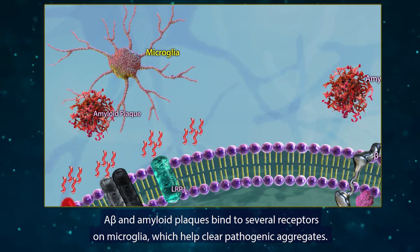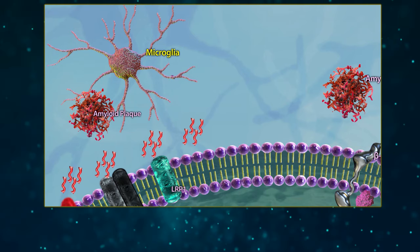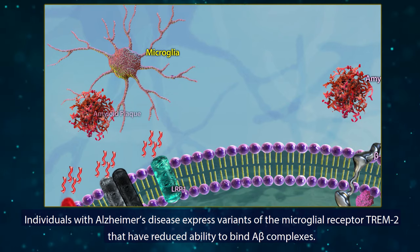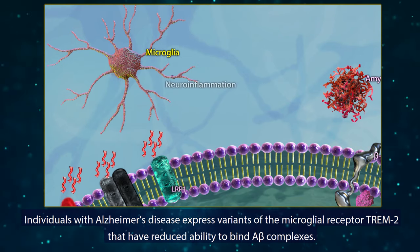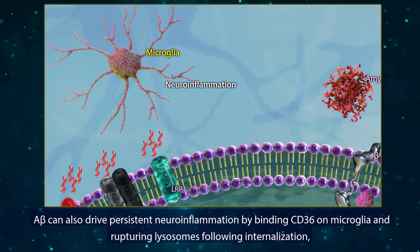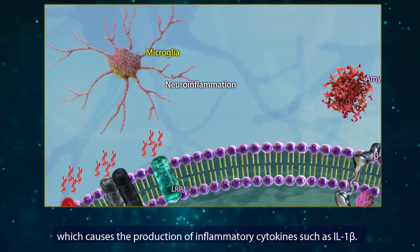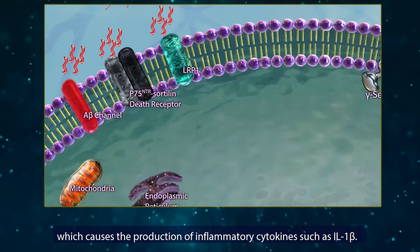Amyloid beta and amyloid plaques bind to several receptors on microglia, which help clear pathogenic aggregates. Individuals with Alzheimer's disease express variants of the microglial receptor TREM2 that have reduced ability to bind to amyloid beta complexes. Amyloid beta can also drive persistent neuroinflammation by binding CD36 on microglia and rupturing lysosomes following internalization, which causes the production of inflammatory cytokines such as IL-1 beta.